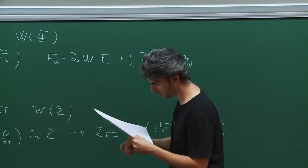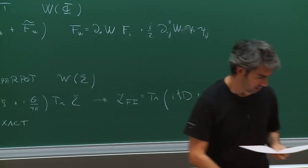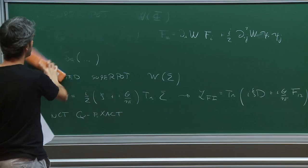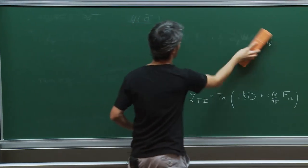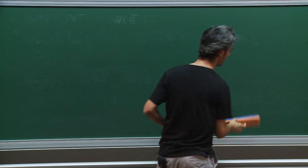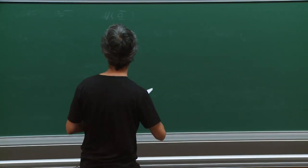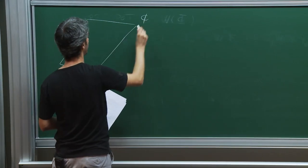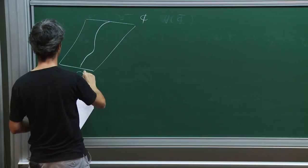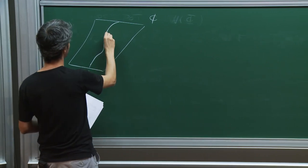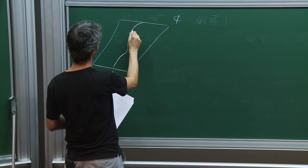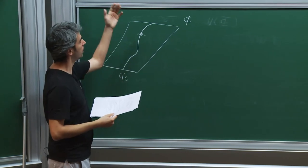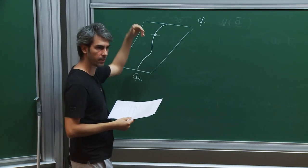How do we compute these one-loop determinants? Essentially, for each of these BPS configurations, we take the localization term, expand it at quadratic order around that point. The picture is that we have the space of field configurations, we have the special set of BPS configurations, and for each point we expand the quadratic action and multiply all the eigenvalues.